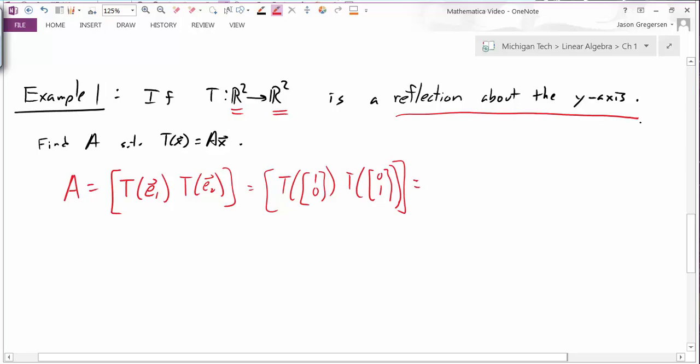So what happens when we apply the transformation of these vectors, when we reflect these vectors about the y-axis? Well, when we reflect this vector about the y-axis, we get the vector negative 1, 0. And we reflect this vector on the y-axis because it's on the y-axis, it stays the same. So this should be the matrix representation of this transformation.